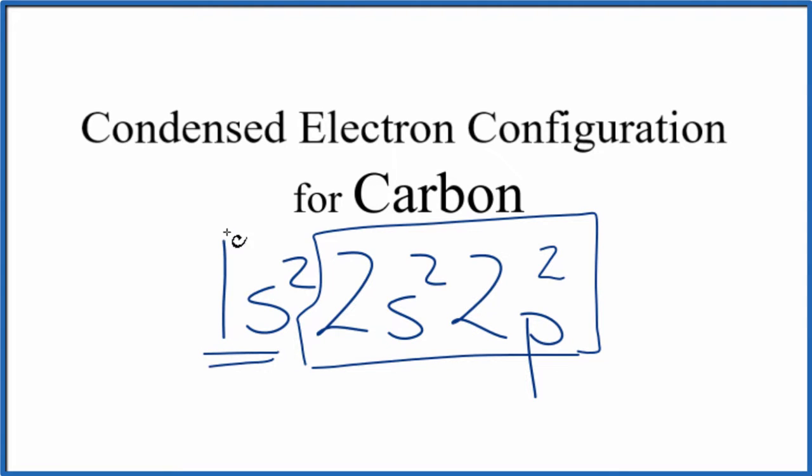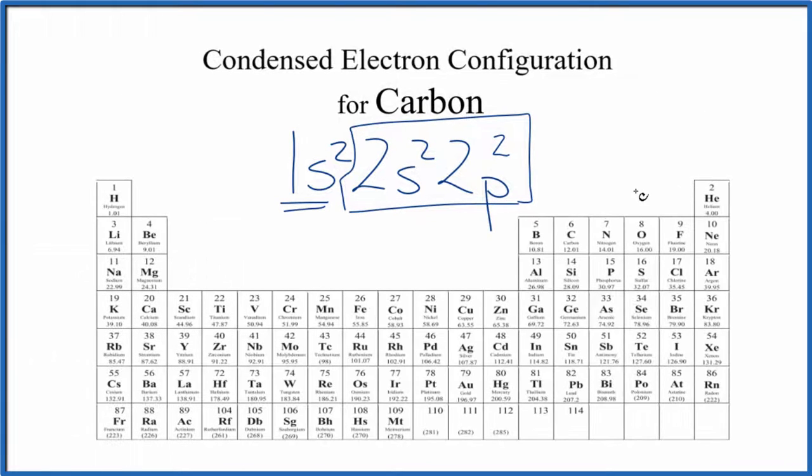With carbon, there's really not much. There's the 1s2, but we can still do this. So we go to the periodic table, and we can see carbon's right here. It has an atomic number of six.